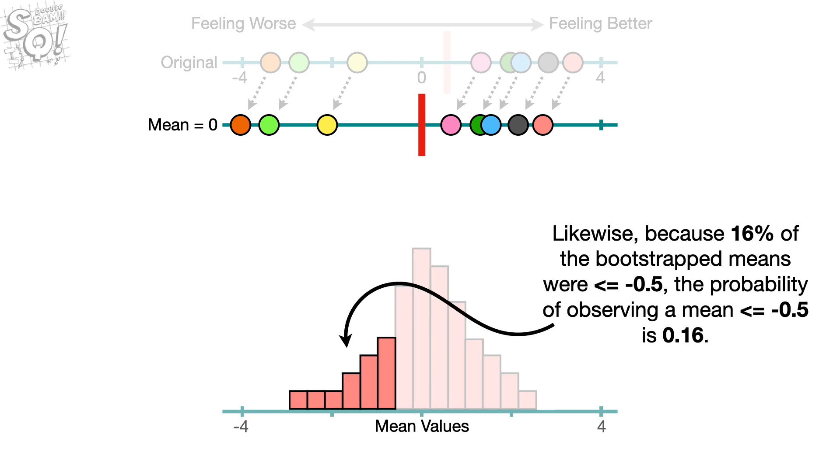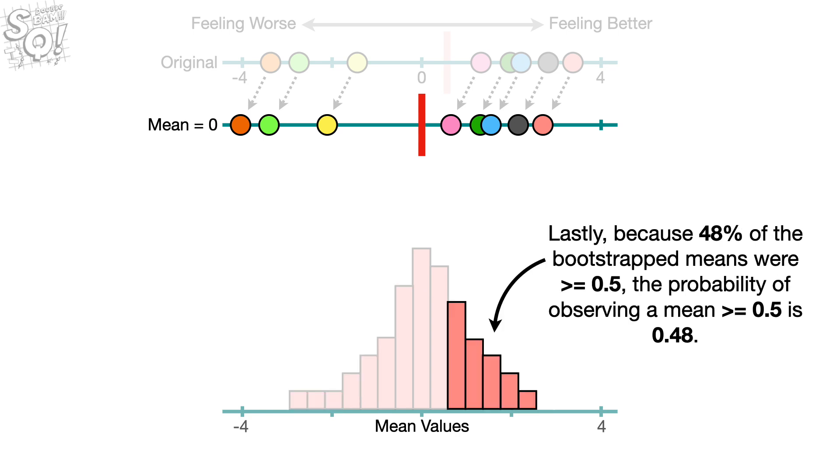Likewise, because 16% of the bootstrap means were less than or equal to negative 0.5, the probability of observing a mean less than or equal to negative 0.5 is 0.16. Lastly, because 48% of the bootstrap means were greater than or equal to 0.5, the probability of observing a mean greater than or equal to 0.5 is 0.48.